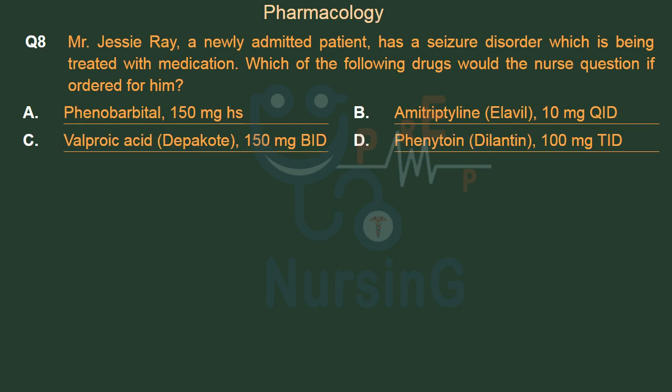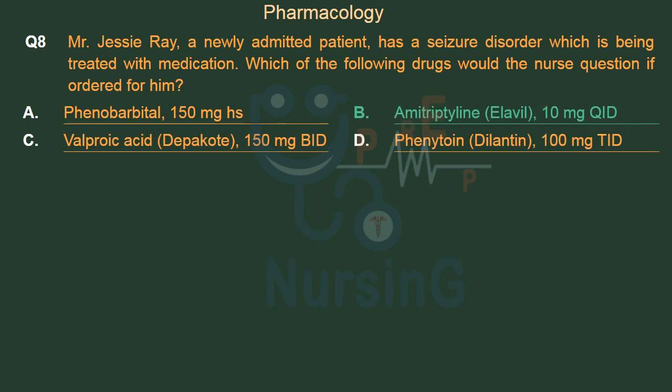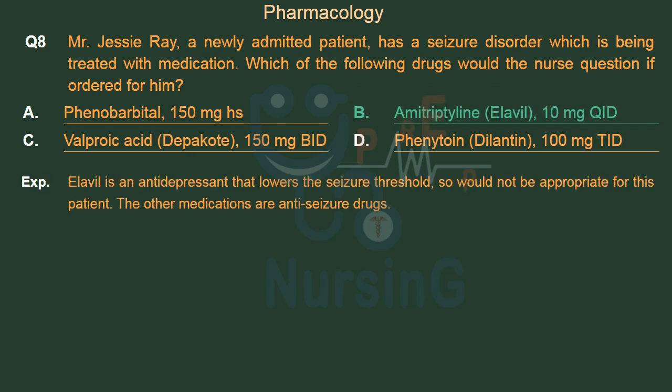Elavil is an antidepressant that lowers the seizure threshold, so it would not be appropriate for this patient. The other medications — phenobarbital, valproic acid, and phenytoin — are all anti-seizure drugs.